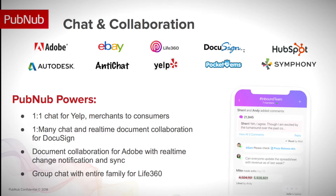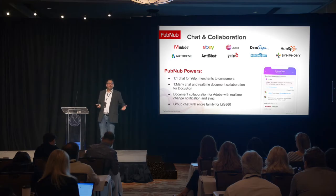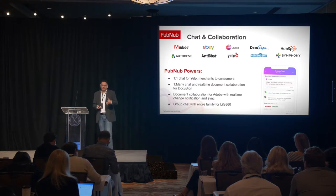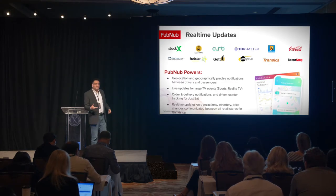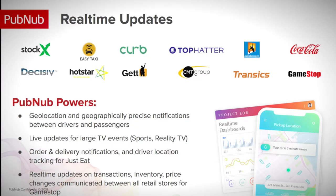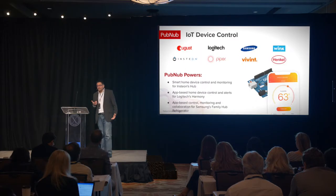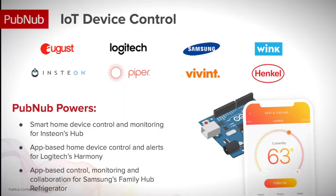On the chat and collaboration side, we are now used by companies like DocuSign and Yelp. We were recently selected by Atlassian to power their competitor to Slack, called HipChat — and the next one is called Stride. In the real-time update space: many Uber competitors, real-time stock updates, live auctions like TopHatter. Anytime you've got real-time data moving on a screen, that underlying data is going between phones, IoT devices, and servers using PubNub. On the device control side, we power smart home companies including August, Logitech, Samsung Smart Refrigerators, and Insteon.